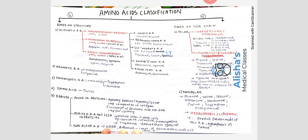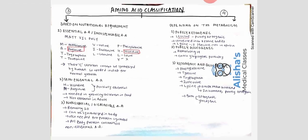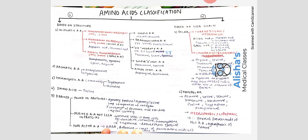Hello and welcome to Alicia's Medical Classes. Today's topic is amino acid classification. Amino acids are divided into four groups: number one is based on structure, number two is based on side chain, number three is based on nutritional requirement, and number four is based on metabolism.